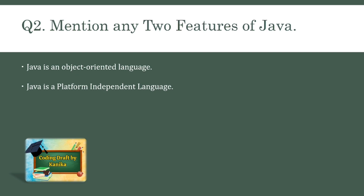The next question is: mention any two features of Java. Java is an object-oriented language, as all program code and data resides within objects and classes. Java is also a platform-independent language, popular due to its 'Write Once, Run Anywhere' capability.